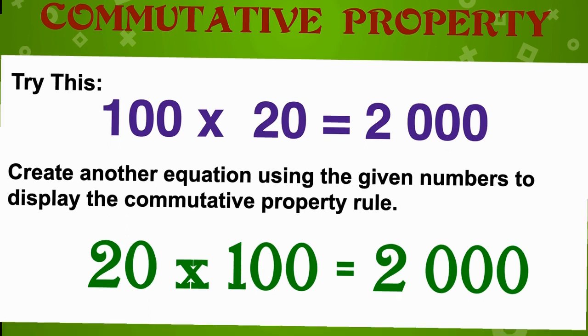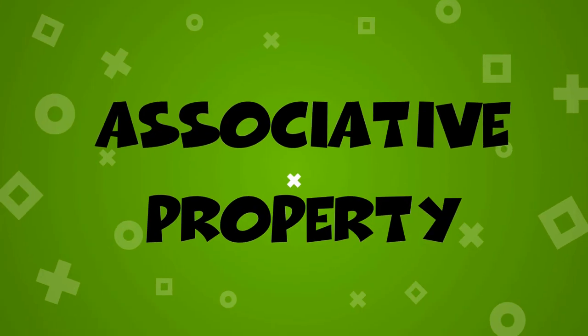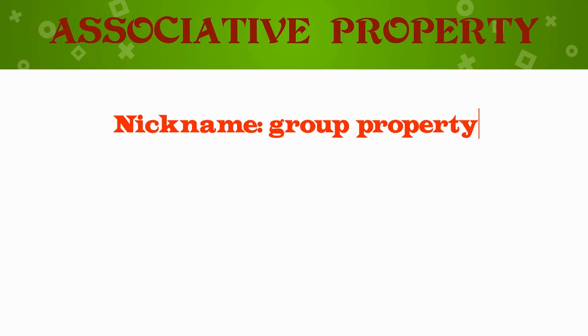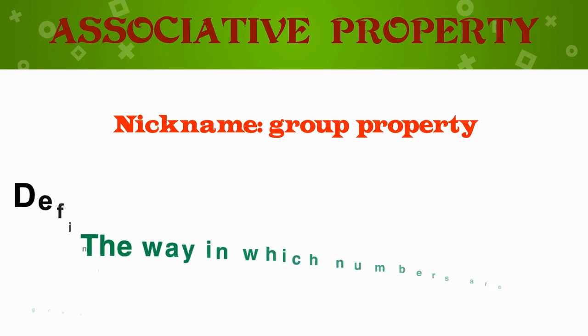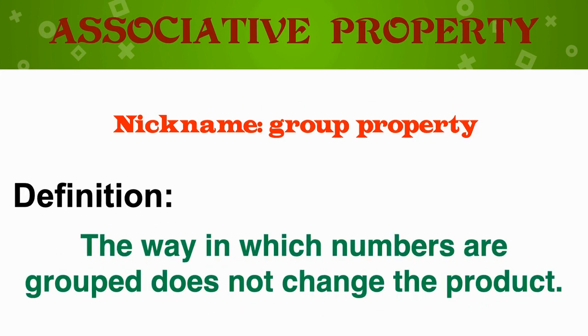Let's move on to the associative property. The associative property, otherwise known as the group property, tells us that no matter the way in which numbers are grouped, it does not change the product. Let's look at this example.